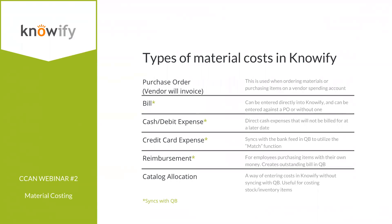We also manage employee reimbursements, where an employee spends their own cash and submits a request. This creates an outstanding bill in both NOAAFI and QuickBooks using the employee as the vendor, so you can write a check from QuickBooks and track the payment. Finally, catalog allocations let you record material costs for items like truck stock or inventory without associating them with QuickBooks — purely for NOAAFI job costing when no bill or purchase is involved.